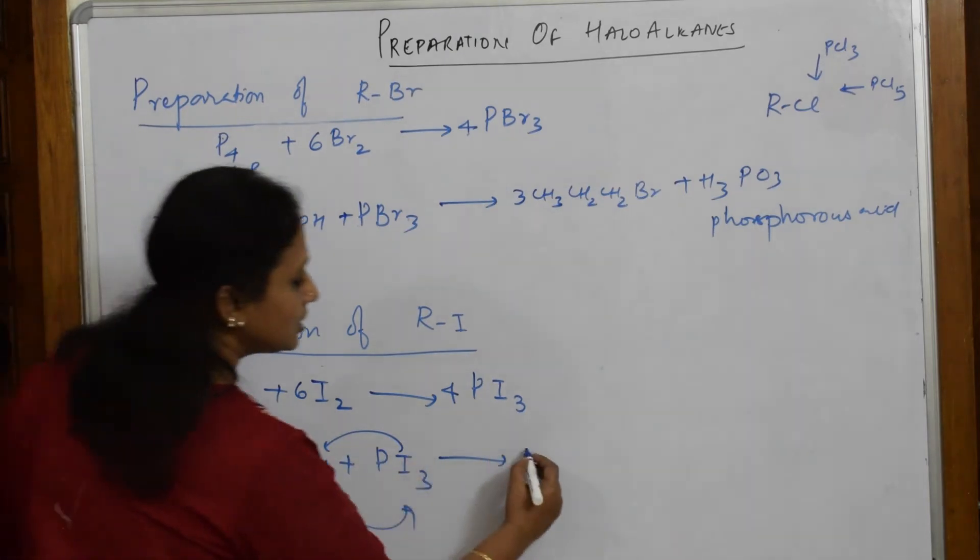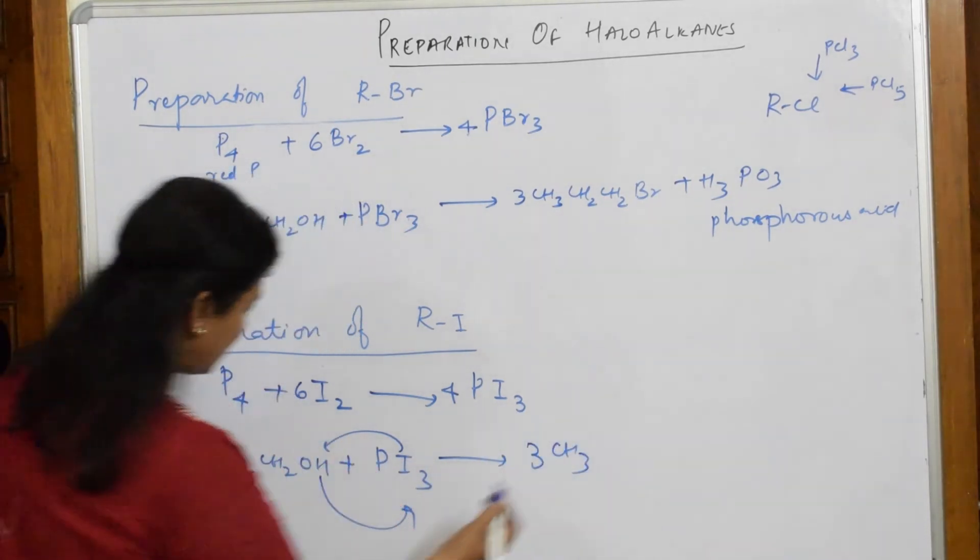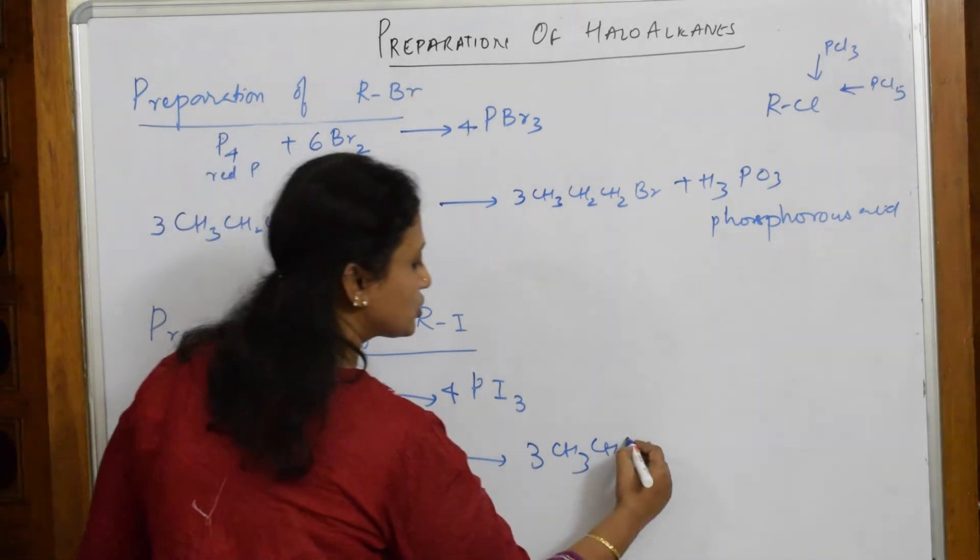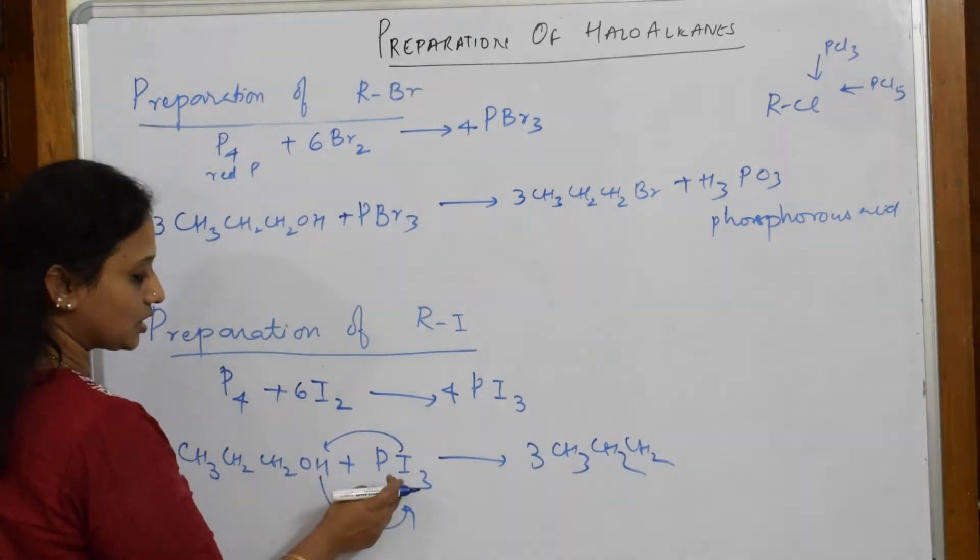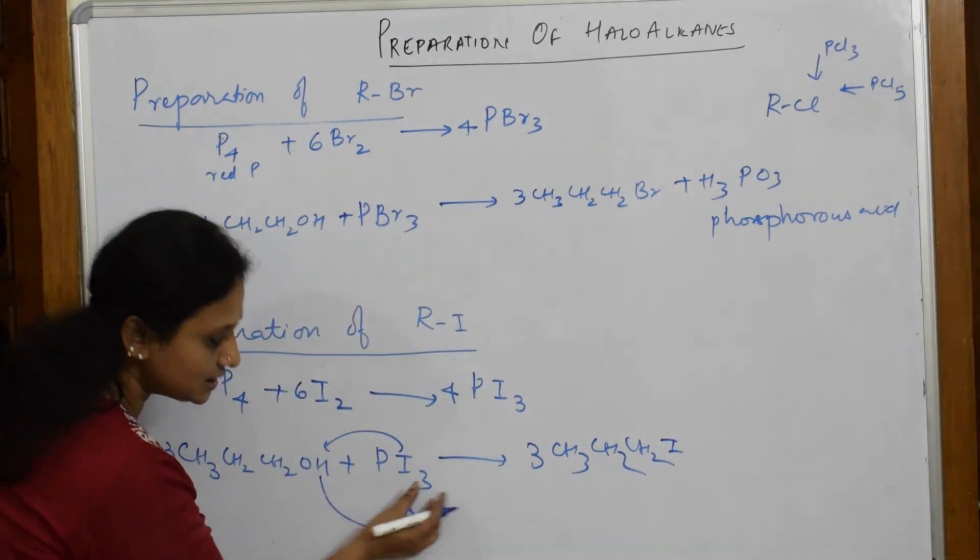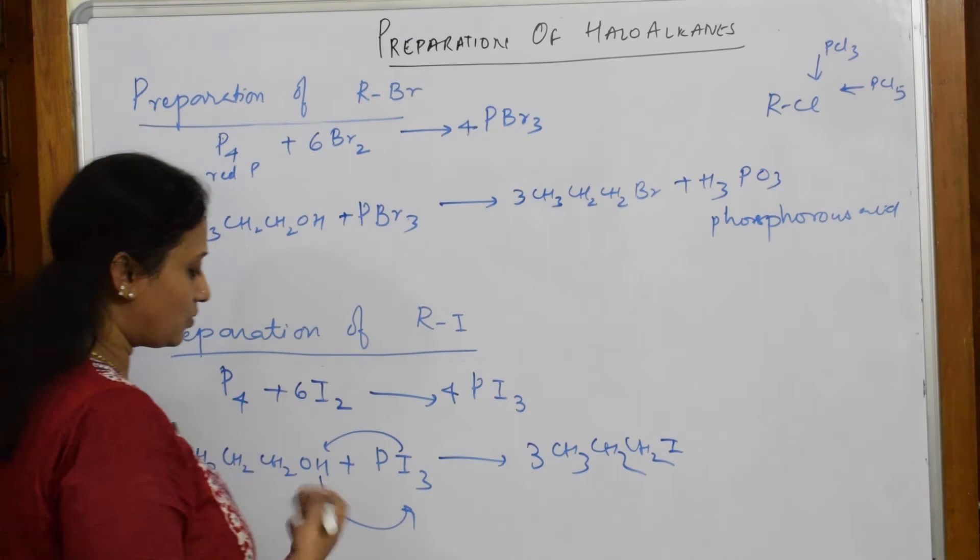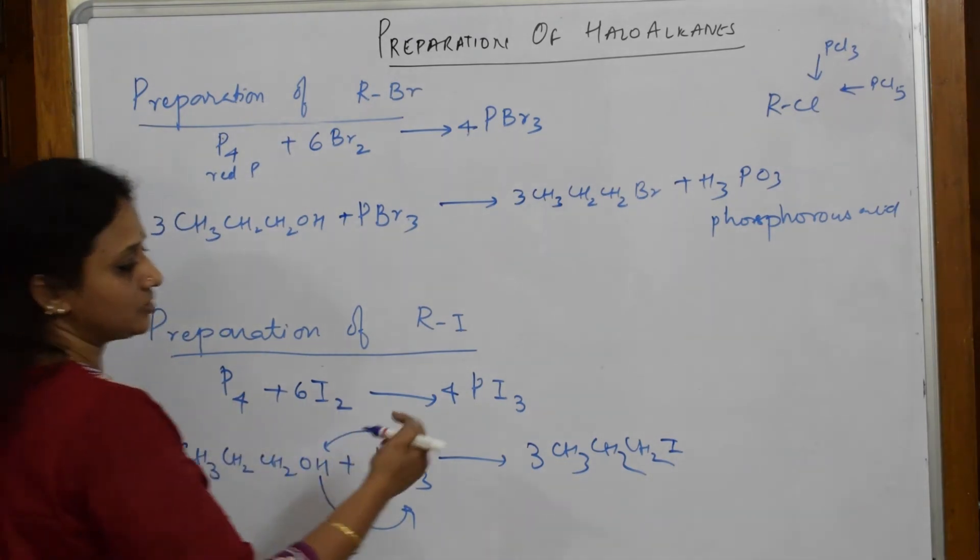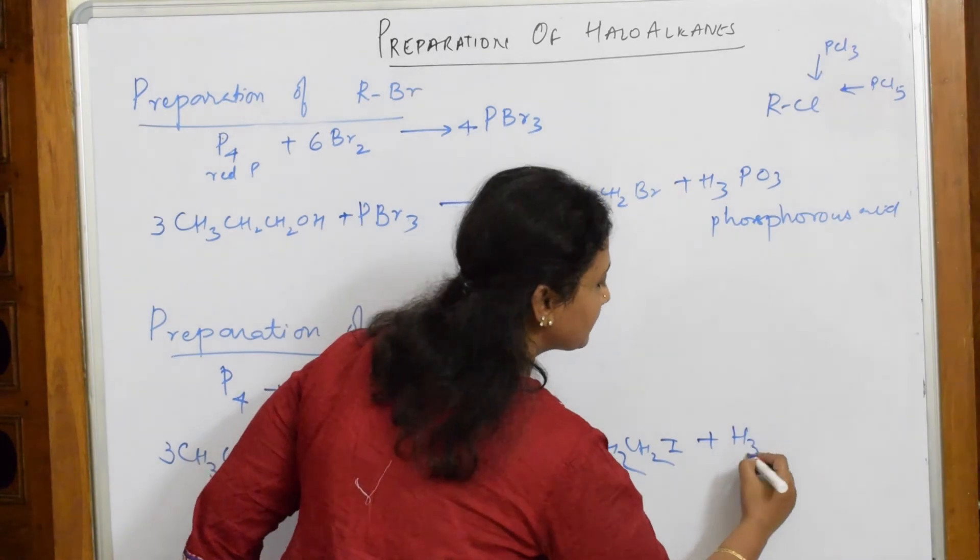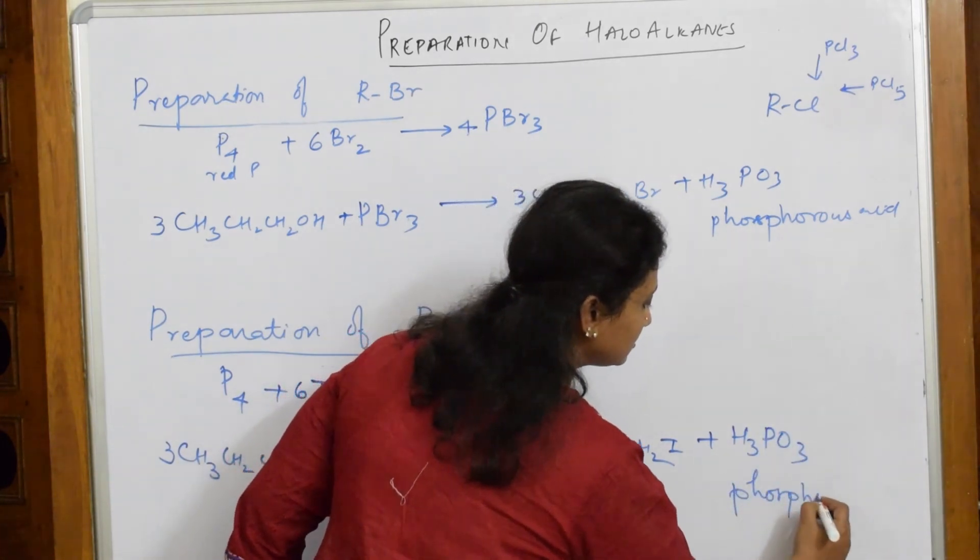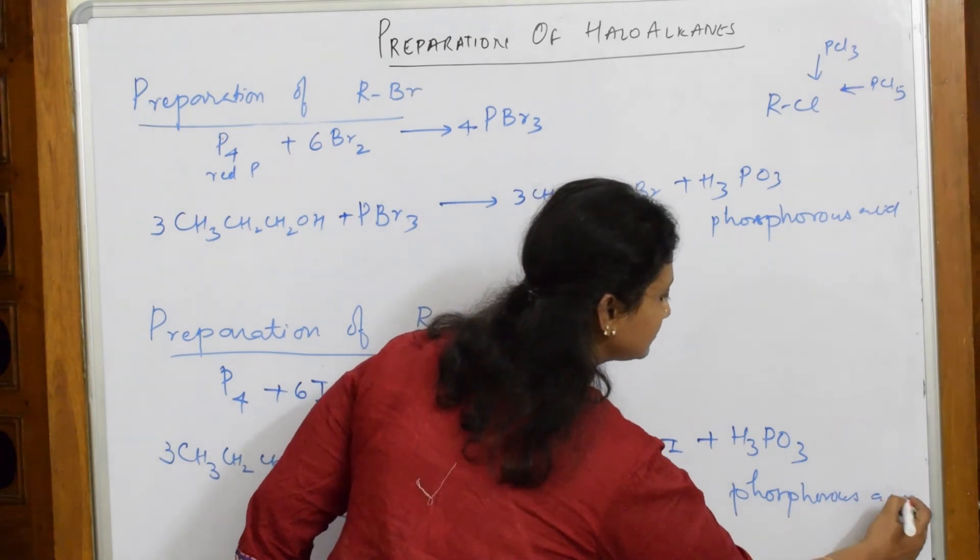So what do I get now? 3 CH3CH2CH2I. So now your I will come and replace this. 3 iodines, 3 iodines, done. What else is left now? H3PO3. So I am going to write H3PO3, phosphorus acid.